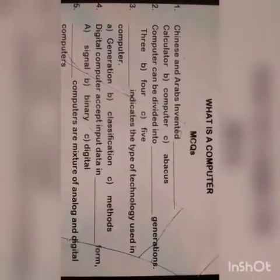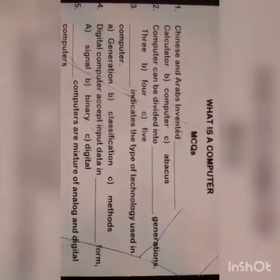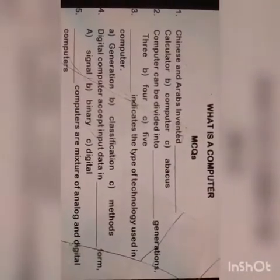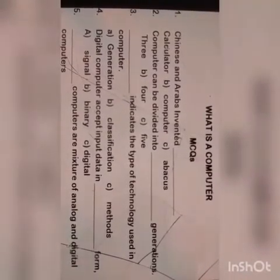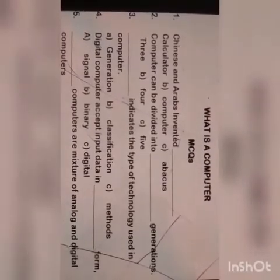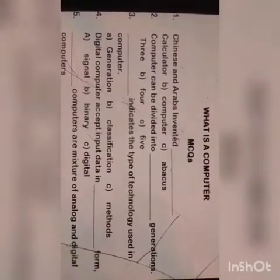MCQ number two: Computer can be divided into dash generations. Option number one is three, option number two is four, option number three is five, and the right option is five.